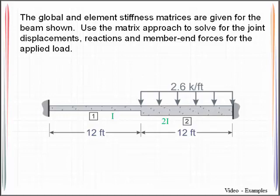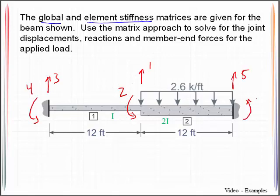We're looking at a two-member beam here. We are being told that we're already given the global and element stiffness matrices. What we're being asked to do is use the matrix approach to solve for the joint displacements, reactions, and member end forces for the particular load that is being applied. First thing I'm going to do is label my unrestrained degrees of freedom 1 and 2 and then label the restrained degrees of freedom 3, 4, 5, and 6.